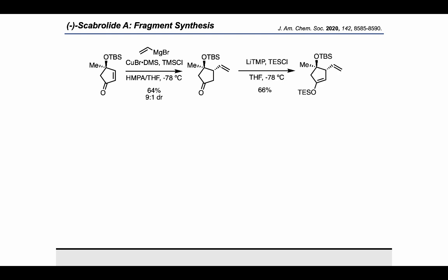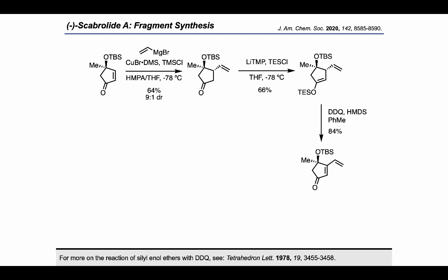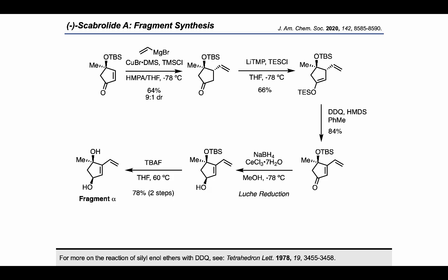Then, using lithium tetramethylpiperidine and TES chloride, they arrived at this silyl enol ether, which could be subjected to DDQ to get to this dienone. They used a diastereoselective Luche reduction to set the stereochemistry of the secondary alcohol and removed the TBS group with TBAF. At this point, they had completed the synthesis of the piece we're calling fragment alpha.